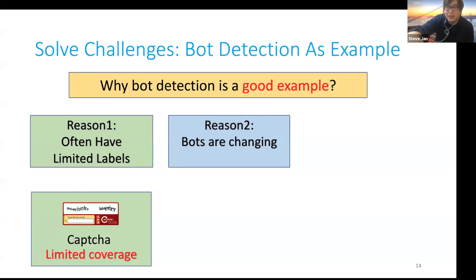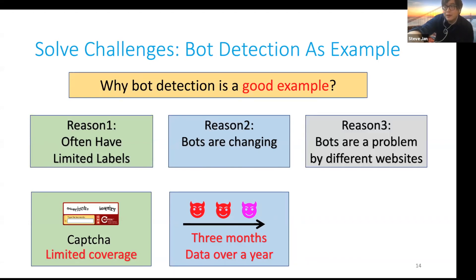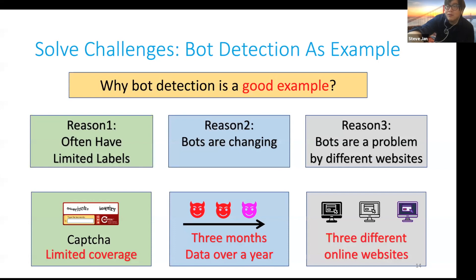Second, bots are changing because they attempt to evade existing defenses. We collect three months of data over a year to monitor how bots change. Third, bots are a problem faced by different websites. We collect data from three different websites, each with different functionality, and it is not trivial to use one detection method for all different websites. With these three reasons, we think bot detection is a good example to study these challenges.